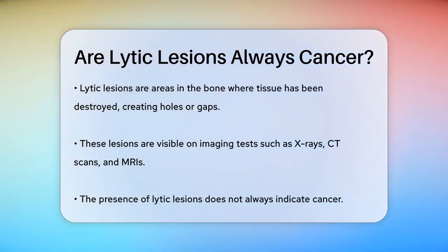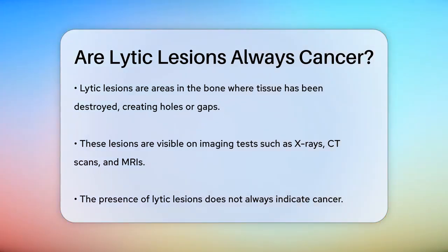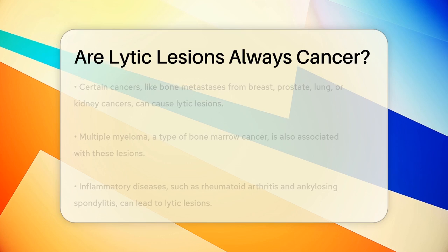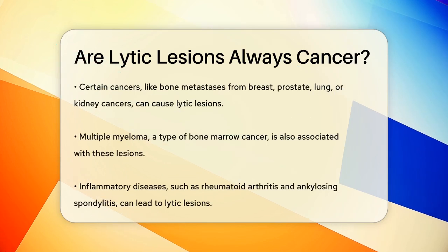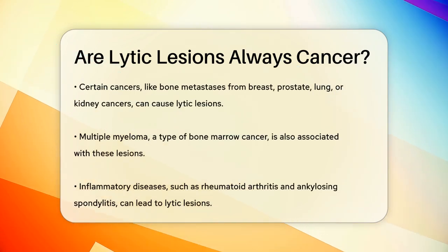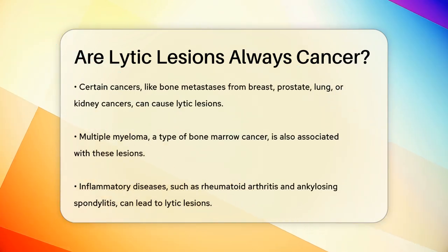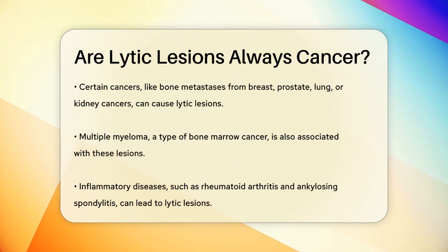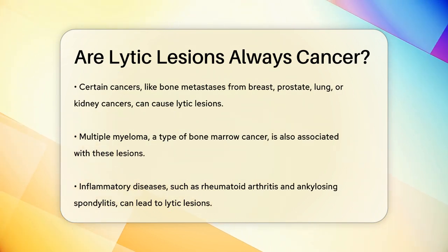The question is, are these lesions always a sign of cancer? Not necessarily. While it's true that some cancers can cause lytic lesions — such as bone metastases from breast, prostate, lung, or kidney cancers, or multiple myeloma, which is a type of bone marrow cancer — there are other causes as well.